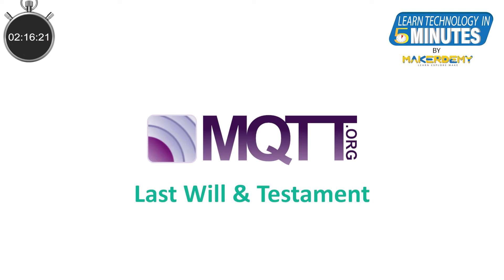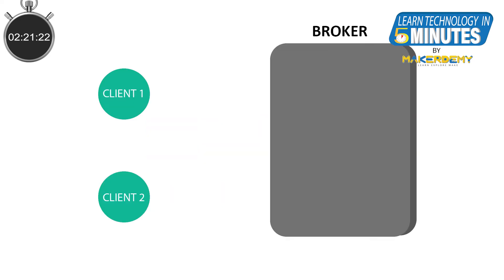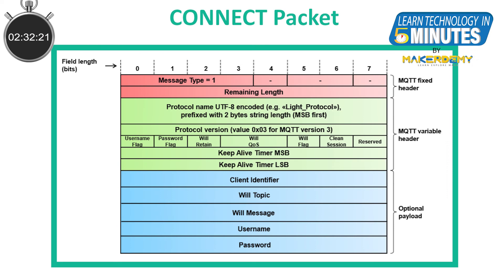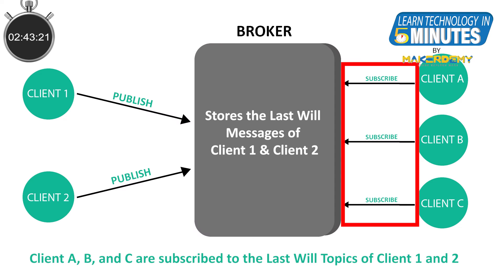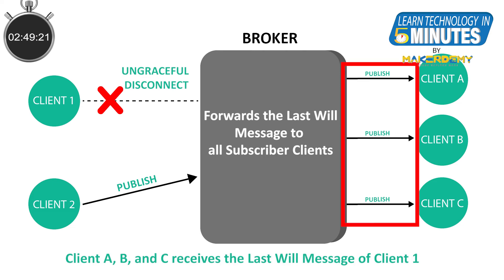Due to the decoupling nature of the MQTT architecture, the other clients who have subscribed to a published topic of the disconnected client will not know about the ungraceful disconnect. This is where the Last Will and Testament feature of MQTT comes into the picture. Each client can specify its last will message when it first connects to a broker. The last will message and its properties are all sent in the connect packet itself, including the last will message topic, the last will message itself, the last will flag, and the message quality of service and retain message flag. The broker stores the message until it detects the ungraceful disconnect, then sends the last will message to all subscribed clients of the last will message topic.